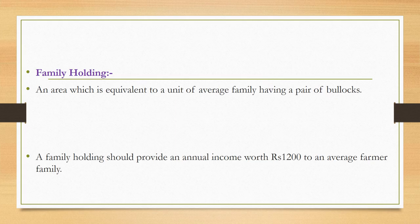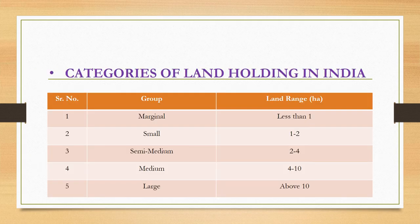The next concept is family holding. Family holding means an area equivalent to a unit of an average family having a pair of bullocks. Another definition: a family holding should provide an annual income of 1200 rupees to an average farmer family. That land holding is known as family holding, meaning it must provide an annual income of 1200 rupees to the average family of a farmer.